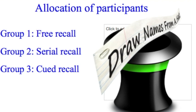We need to allocate students into three groups — a free recall group, a serial recall group, and a cued recall group. We could do that non-randomly row by row, or randomly by putting names in hats. There's no control condition here. The independent variable is what type of recall method is being used, and the dependent variable you'll find out shortly.